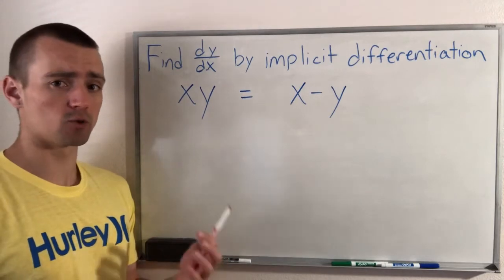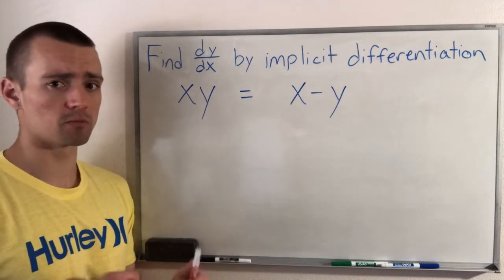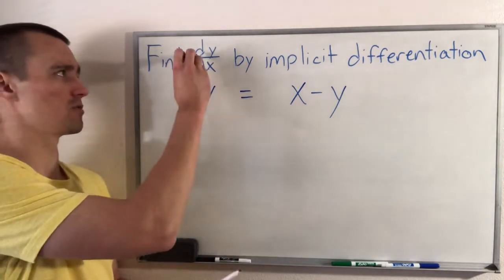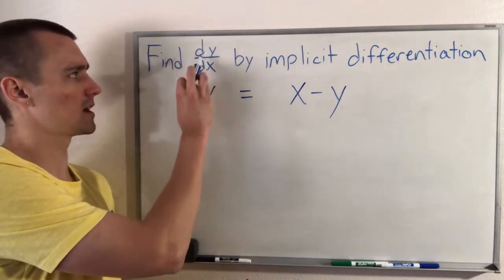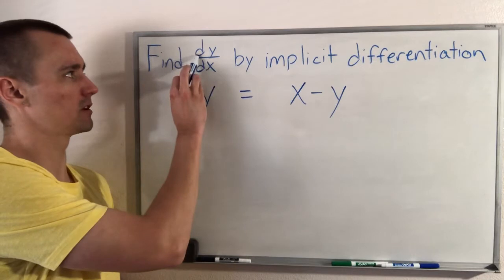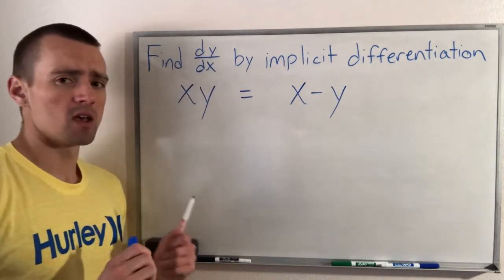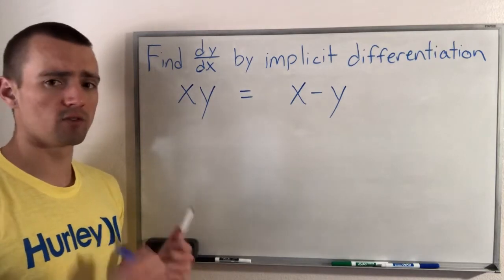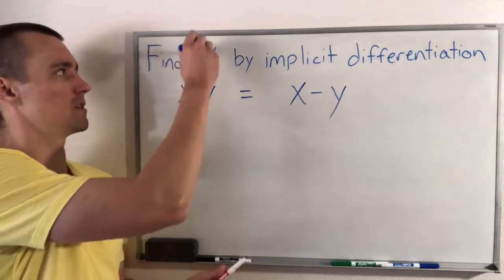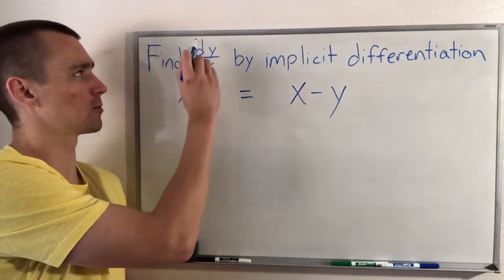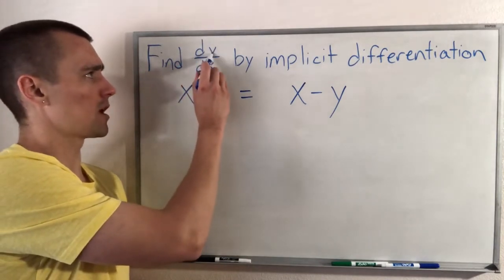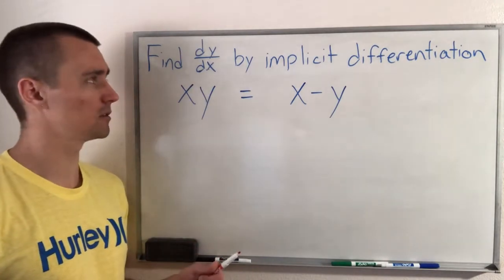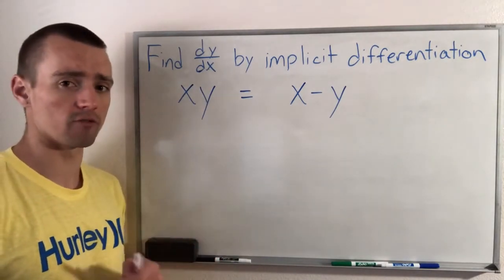Similar to other implicit differentiation problems, the first thing you want to do is take note of what it's asking you to find. So we're looking for dy/dx which just means the derivative of y with respect to x. You want to pay attention to this because it does give you a lot of information. What this is telling us is that we're finding the derivative of y where x is our independent variable. So x is our variable and y is a function of x.